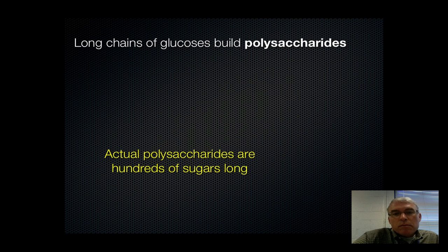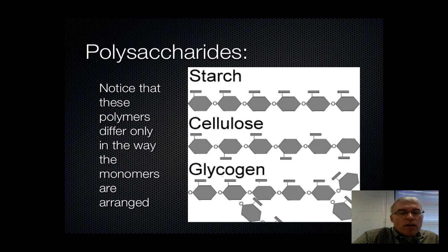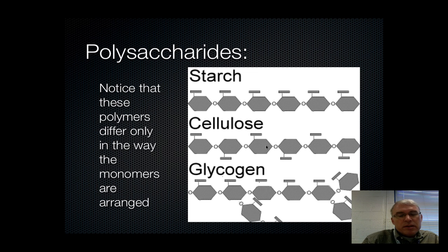Long chains of glucoses, or the polymers of glucose, are called polysaccharides, and polysaccharides are actually hundreds of sugars long. If we put together all these glucoses, we can build a polymer of glucose called a polysaccharide. Here are three examples: starch, cellulose, and glycogen. Notice that all of these polymers are built from glucoses hooked together in different ways. In starch, all the glucoses are hooked one right after the other like a train of train cars. In cellulose, every other glucose has been flipped, so the bond is a little different. In glycogen, it looks a lot like starch except it has branching chains. All three are built from the monomer glucose.